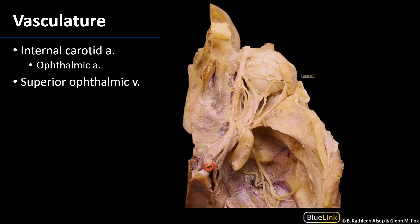The ophthalmic artery is obscured here, but it does travel along with cranial nerve 2, which is the optic nerve, through the optic canal. We can see the ophthalmic artery as it crosses over cranial nerve 2, and it is moving along the medial wall of the orbit between the superior oblique muscle and the medial rectus muscle.